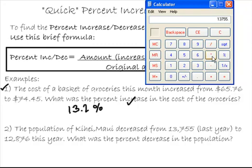I'm always going to take the larger number and subtract the smaller number. The words increase and decrease deal with whether it's a negative or a positive. And then I'm going to subtract 12.876, 12.876 equals, that's 879, the difference in population, 879 people.